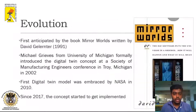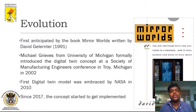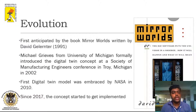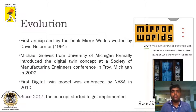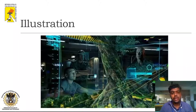Where did this concept come from? It originated from a fictional story written by David Galanter in the year 1991, in his book 'Mirror Goals,' where he proposed this idea as fiction. Based on this, Michael Greaves from the University of Michigan presented the concept of digital twin at the Society of Manufacturing Engineers conference in Troy, Michigan in 2002. NASA then experimented with this technology in 2010, and it was finally launched in the commercial market in 2017.